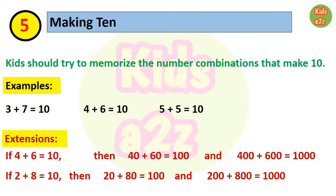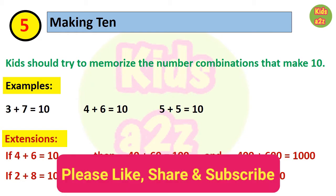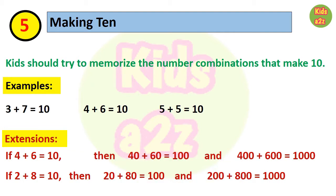Next is making 10. Kids should try to memorize the number combinations that make 10, like 3 plus 7 equals 10, 4 plus 6 equals 10, or 5 plus 5 equals 10. Using this strategy, if 4 plus 6 equals 10, then 40 plus 60 equals 100, and 400 plus 600 equals 1000.